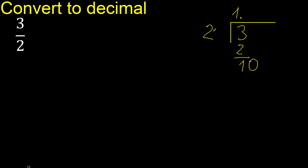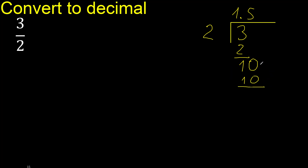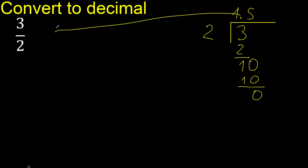10. Therefore 2 multiplied by 5 is 10, is not greater. Subtract: 10 minus 10 is 0. Therefore finish here.